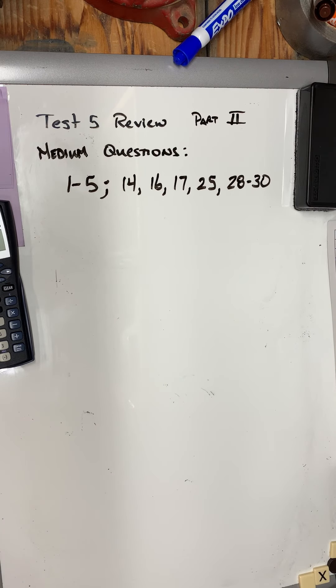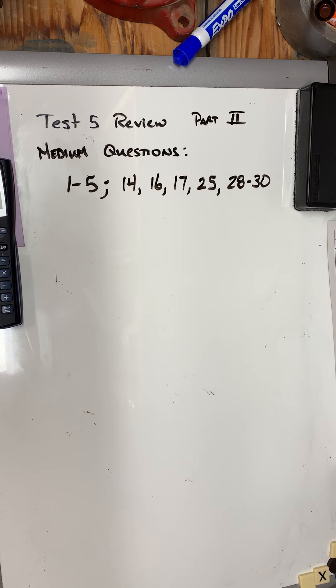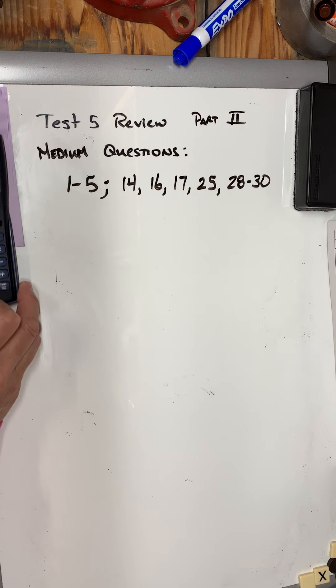Hi, this is Dr. Post with part two of Test 5 review. I'm going to talk about the medium questions: 1 through 5, 14, 16, 17, 25, and 28 through 30. These are medium because they take a little bit longer to do or they're just a little bit more difficult, and there are 12 of them, so that's about a third of all the problems.